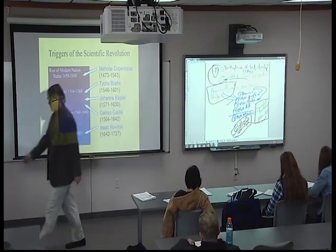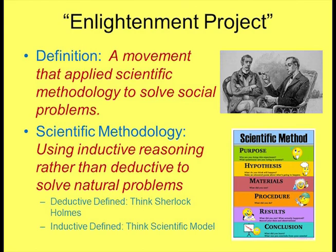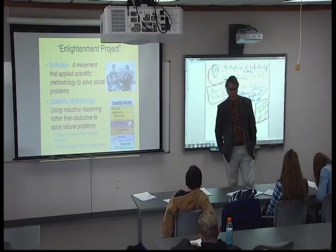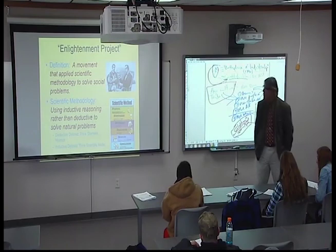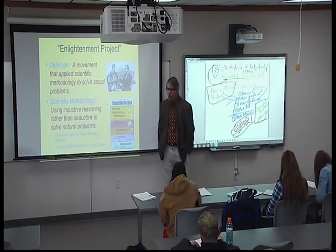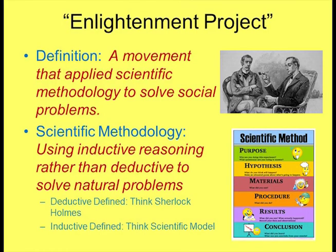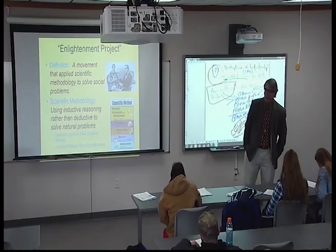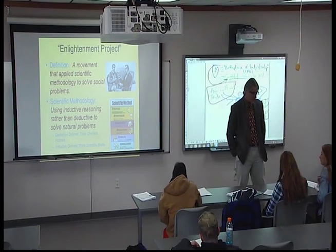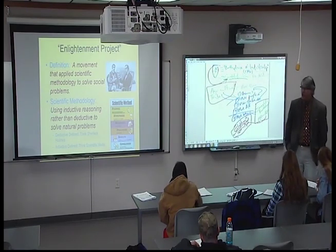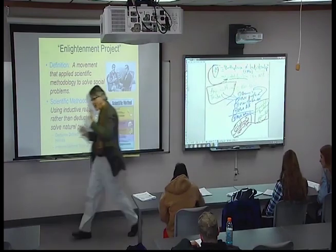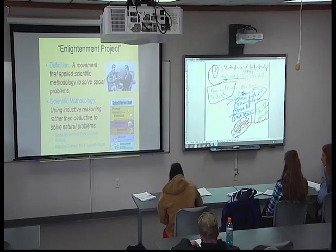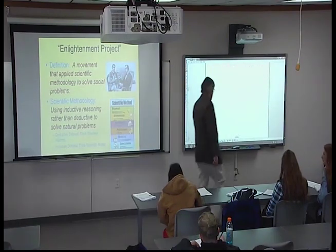Let me make sure you have some definitions. First, the definition of the Enlightenment: it's a movement — an intellectual movement — of ideas that applied scientific methodology to solve social problems. That's an easy definition, but it doesn't mean much unless you understand what scientific methodology is. Scientific methodology is using inductive reasoning to solve natural problems — inductive instead of deductive. There are two different types of reasoning, and we need to understand that distinction.